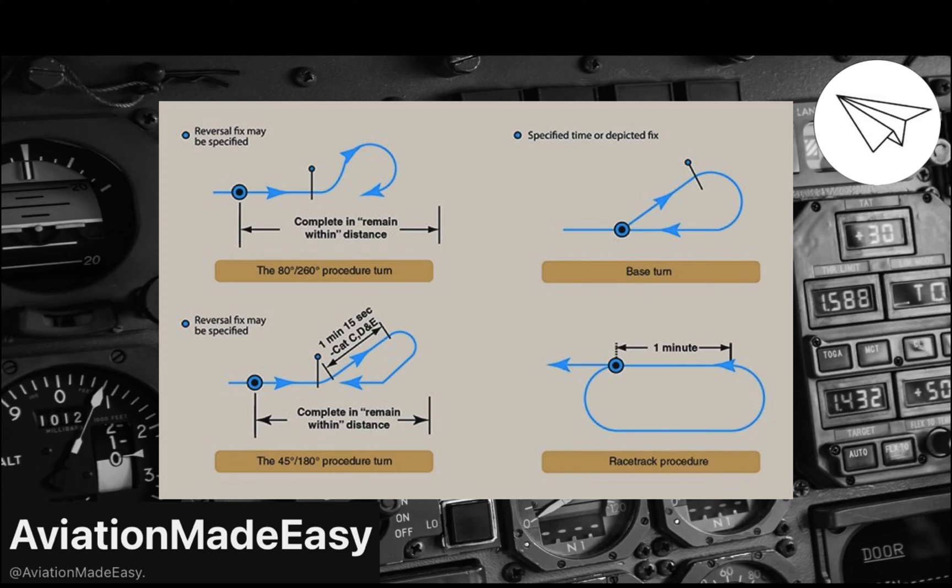The most common one would be the 45/180 degree procedure turn and most flight schools will normally perform them. But you can choose as long as you can fly one of them to a high standard. There's no problem, just make sure that if you decide to do any, do it in the correct direction that will be depicted on the approach chart.